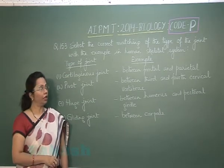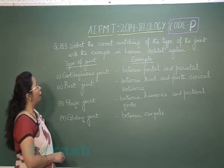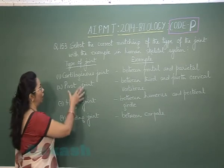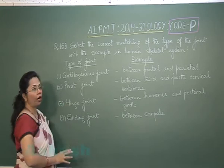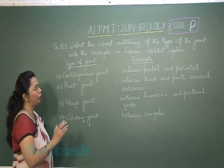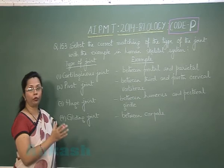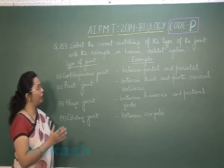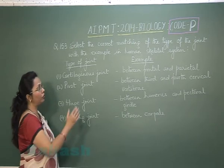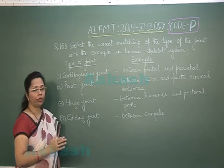Question 153: Select the correct matching of the type of joint with the example in the human skeletal system. The first option is cartilaginous joint between frontal and parietal bones. However, frontal and parietal are skull bones, and the joint between them is a fibrous joint, not a cartilaginous joint. The second option, pivot joint between the third and fourth cervical vertebrae, is incorrect — the pivot joint is actually between the first and second cervical vertebrae, atlas and axis.